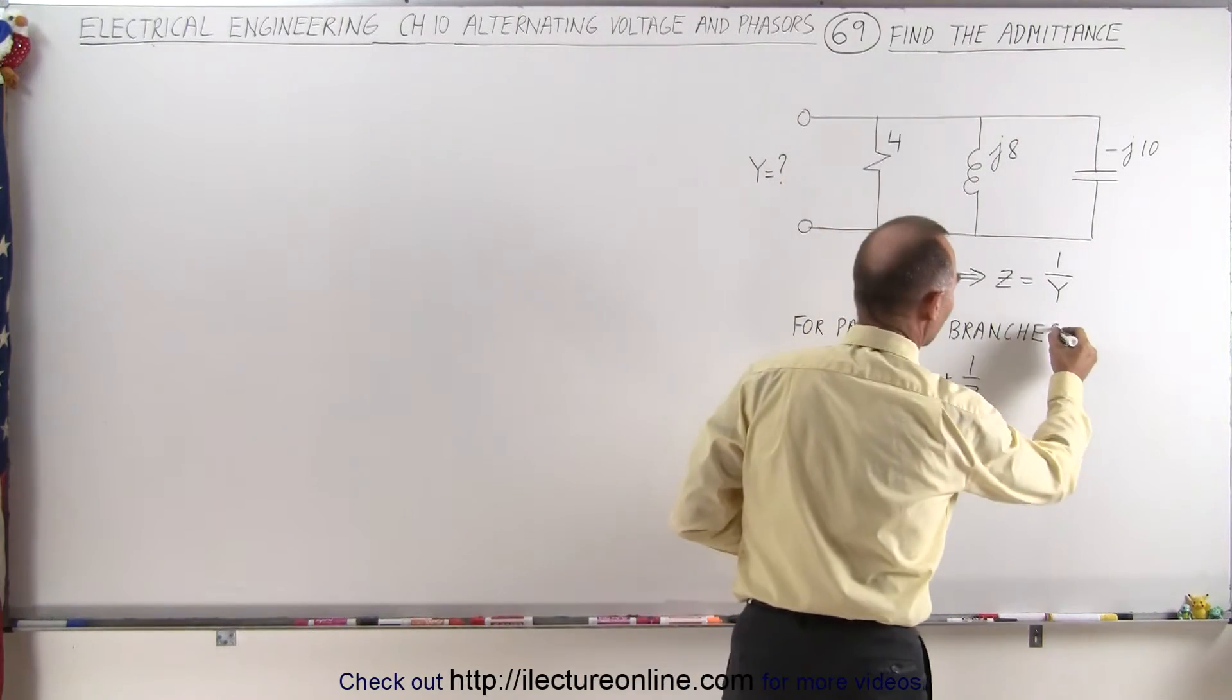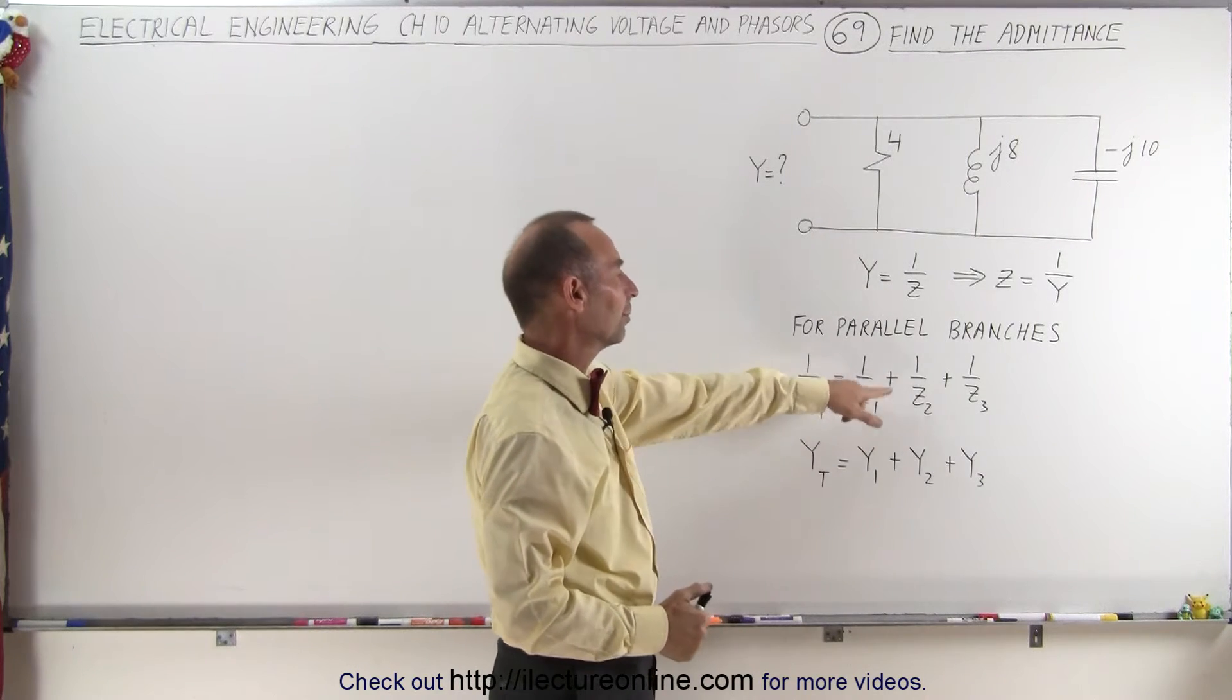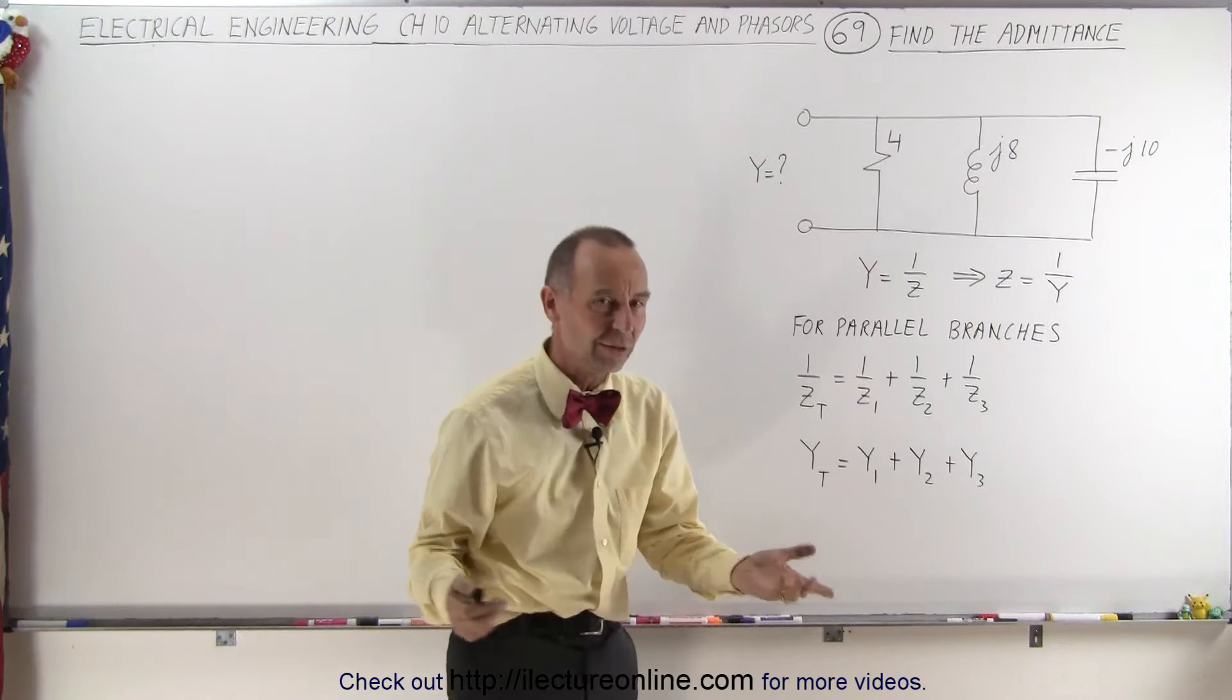And of course I'm missing an S right here, but you have to use the equation that 1 over the total impedance is equal to 1 over Z1 plus 1 over Z2 plus 1 over Z3 and so forth.